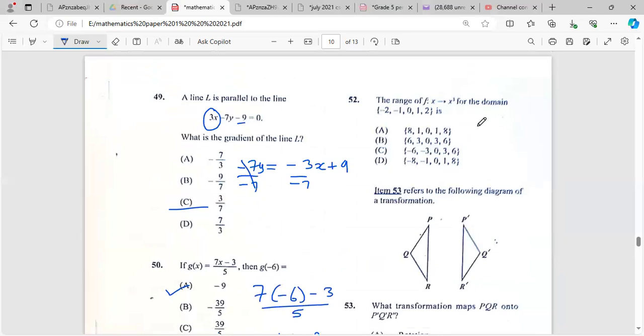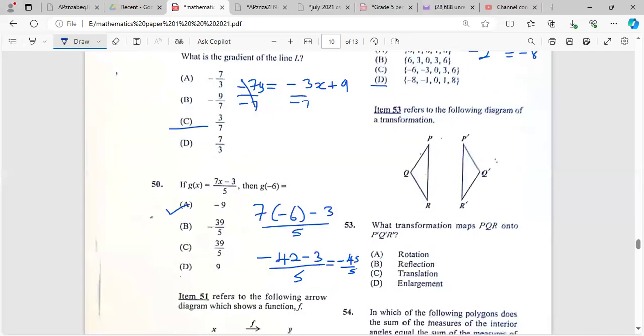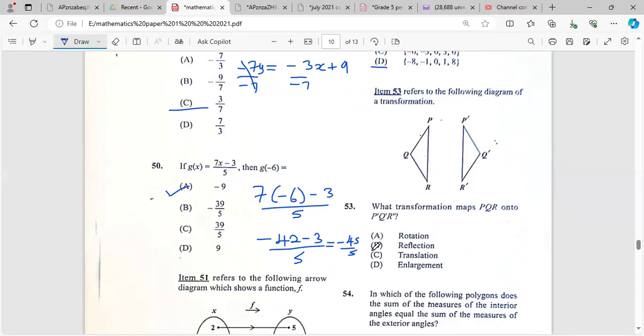The range of x cubed for the domain -2 to 2: if you cube negative 2 you get negative 8, and 2 cubed gives us 8. We just need the endpoints. That would be D. What transformation maps PQRS onto P'Q'R'S'? That's a reflection. Once you see it facing each other like that, you know it's a reflection. The mirror point would be somewhere about here. Each point is equal distance from the mirror line.